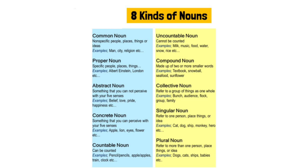Now we have singular noun. Singular means one — it refers to one person, one place, or one thing. Example: cat, dog, ship, monkey. Not 'monkeys' — if it is 'monkeys' it becomes a plural noun.